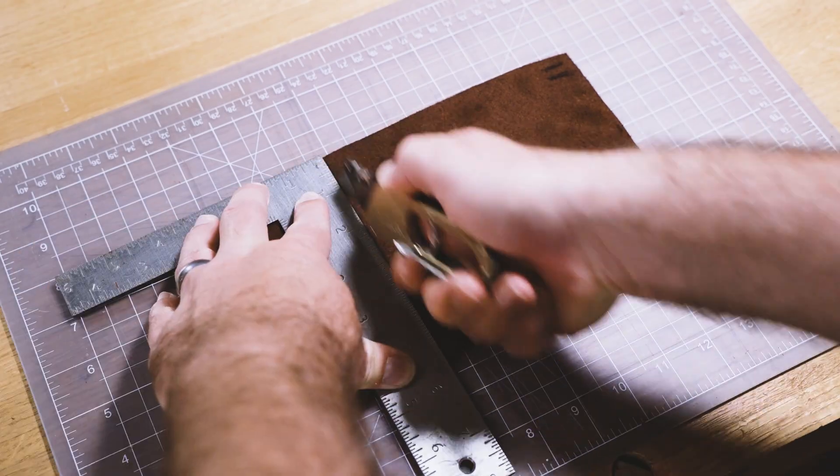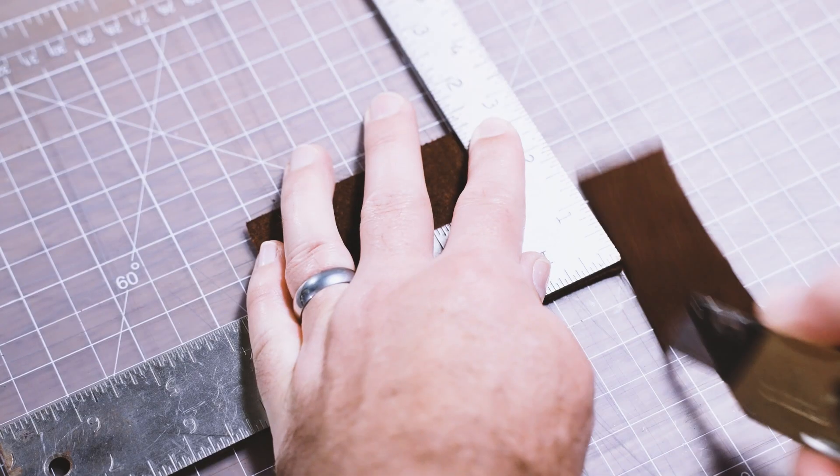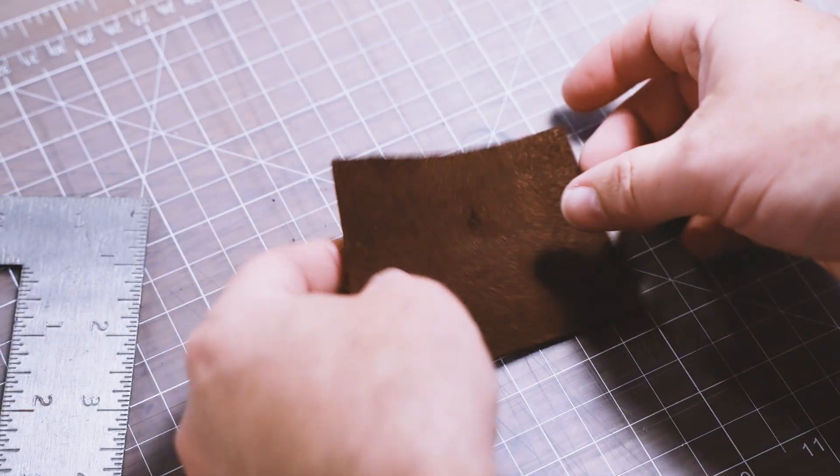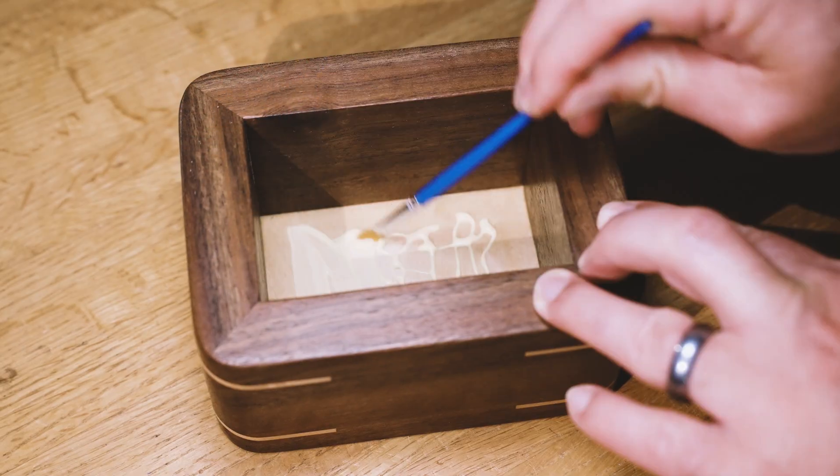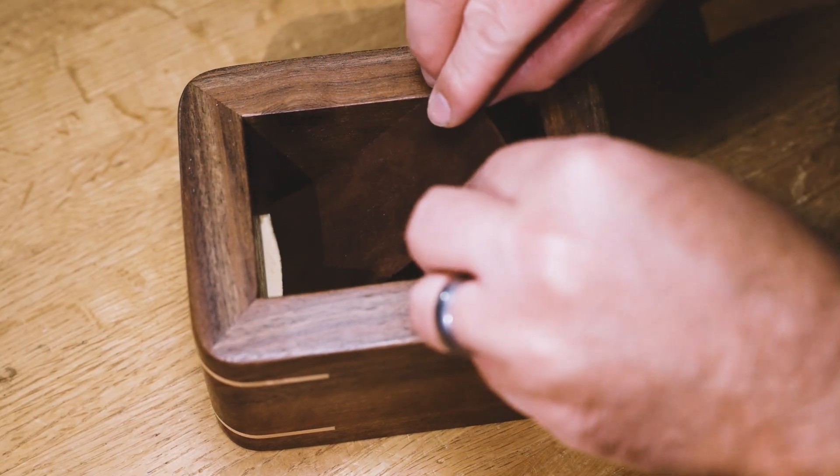I like using leather as a liner for my small boxes. It's easy to cut with a razor blade, and I'll typically just use wood glue to glue it down to the bottom of the box with the soft suede side facing up.